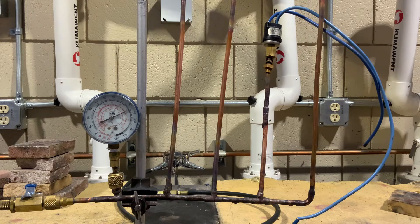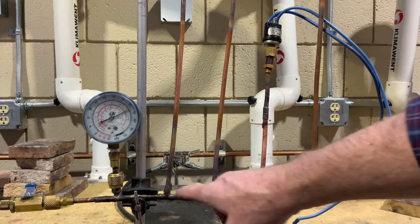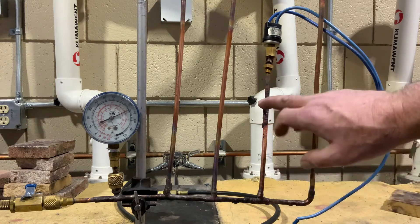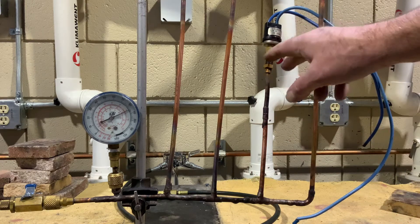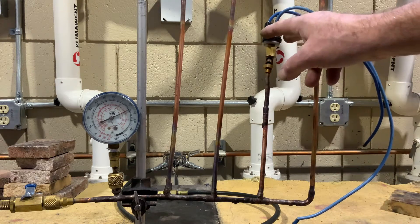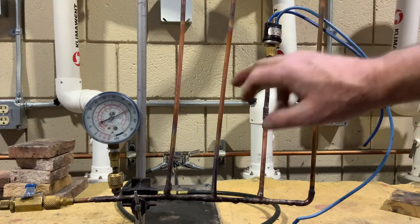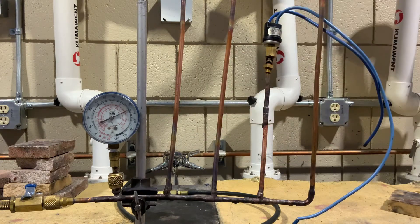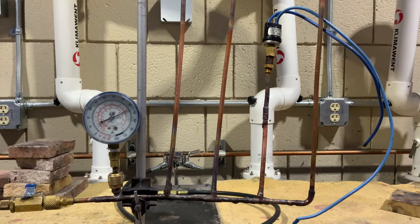You'll run into these particularly on ice machines. Ice machines will have kind of a header. They'll have a stub that has like a high-pressure safety or fan cycling control on it. And then they'll have a couple of blank stubs there. Not quite this long. This is more demonstration purposes.